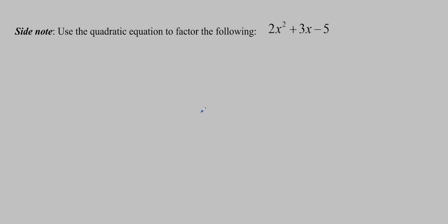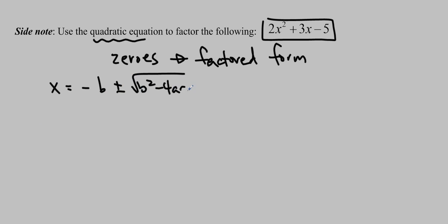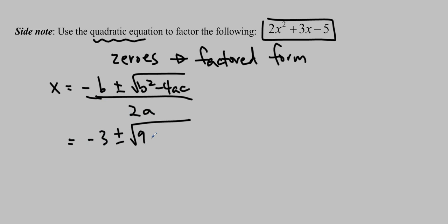Before we move on, I want to talk about this function. Pause the video and use the quadratic formula to find the zeros, then put it in factored form — go from the zeros to factored form. The quadratic formula is x equals negative b plus or minus the square root of b squared minus 4ac, all over 2a. Plugging it in: 9 minus 2 times 4 times negative 5, and we end up with negative 3 plus or minus 7, over 4.